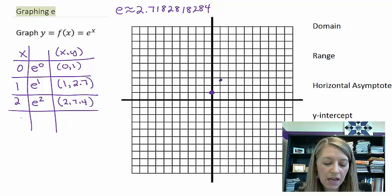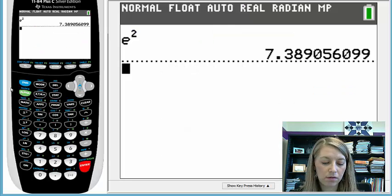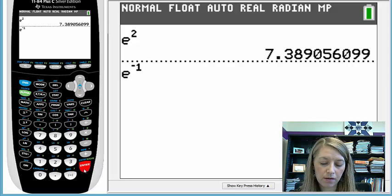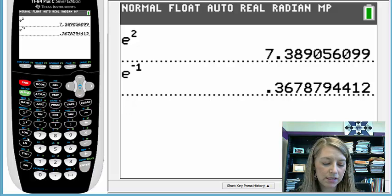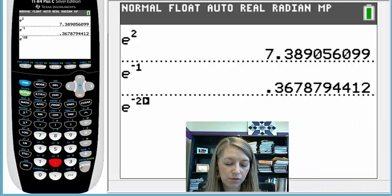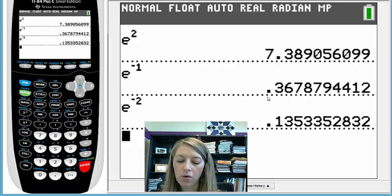And if I wanted to plug in negative values, negative 1. e to the negative 1. And if we're here, I can type in e to the negative 2. So e to the negative 1 gives me approximately 0.4. e to the negative 2 gives me approximately 0.14.